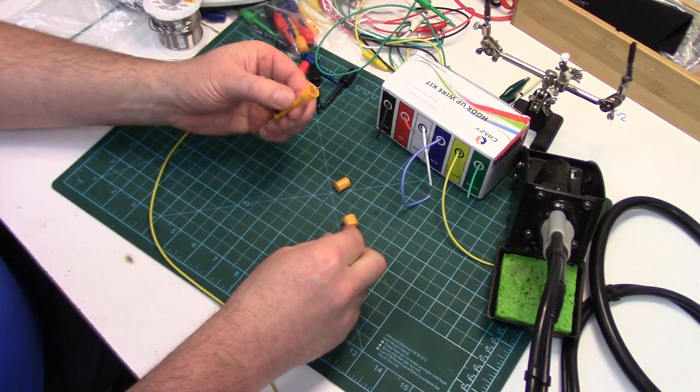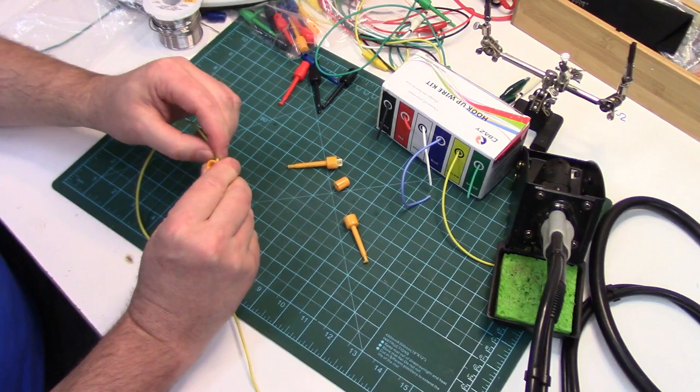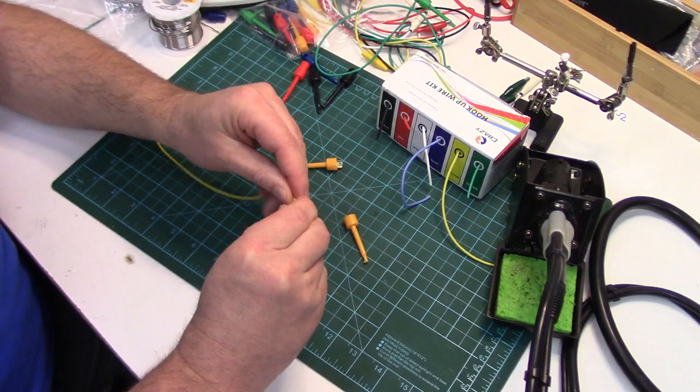These are really easy to make. You just pop the ends of these little J-clips off and you thread the wire through. I'll do that on both ends here.